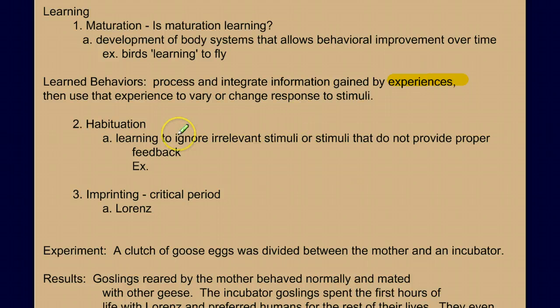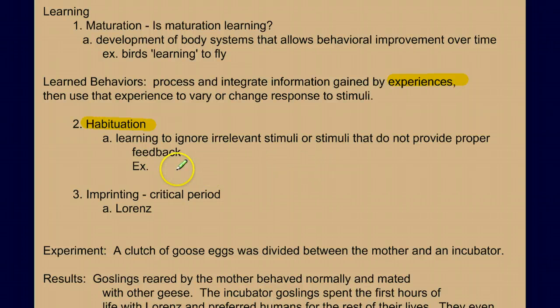One very simple type of learning is called habituation, where we learn to ignore irrelevant stimuli — stimuli that don't provide us any useful feedback. Take a moment to think of some examples of habituation. Basically, if a stimulus doesn't help or hurt us, we probably should ignore it so we can focus on other things that may help or hurt us.